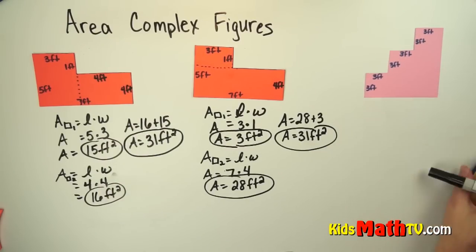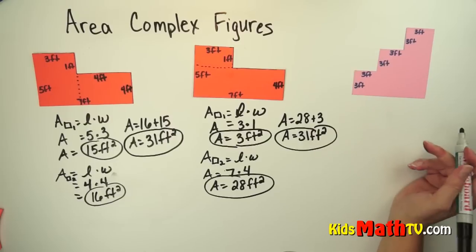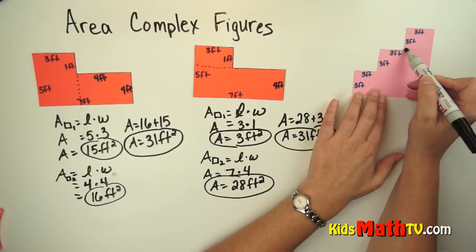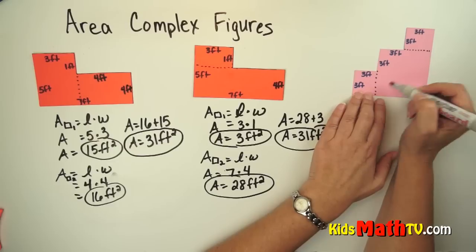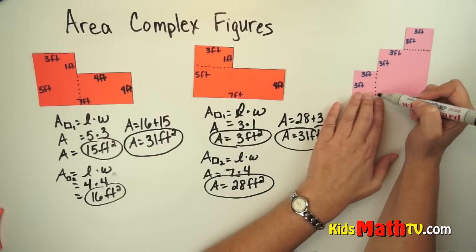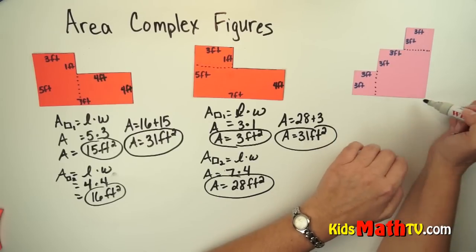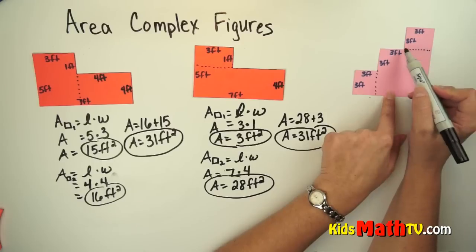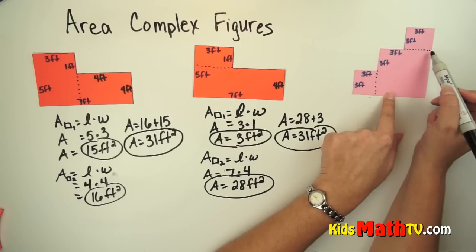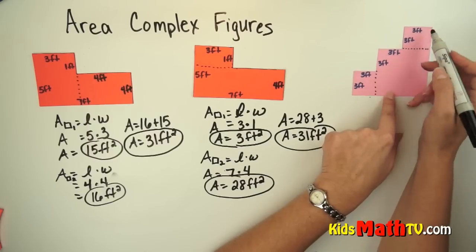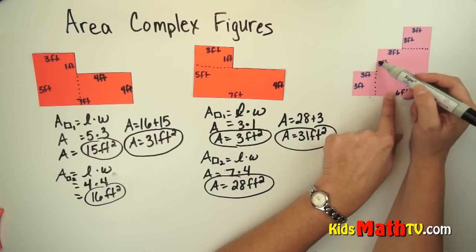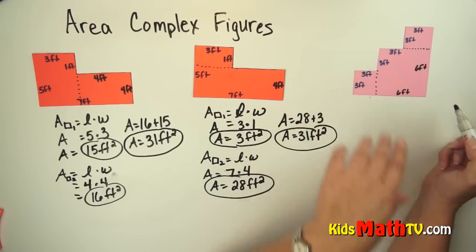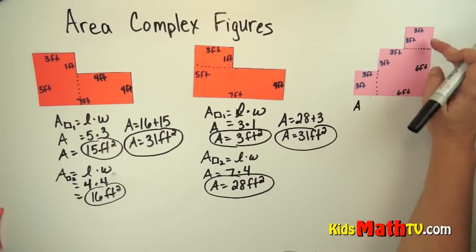Here I have a different type of figure that kind of looks like stairs. We are going to do the same thing. I am going to split it into a small square, another small square, and a larger square. I need to figure out the missing sides. I know this is 3 feet, so that is 3 feet. This is 3 feet and that is 3 feet. For the larger square, 3 plus 3 is 6 feet across, and similarly 6 feet on the other side. So in this case we are going to do 3 areas and add them together.